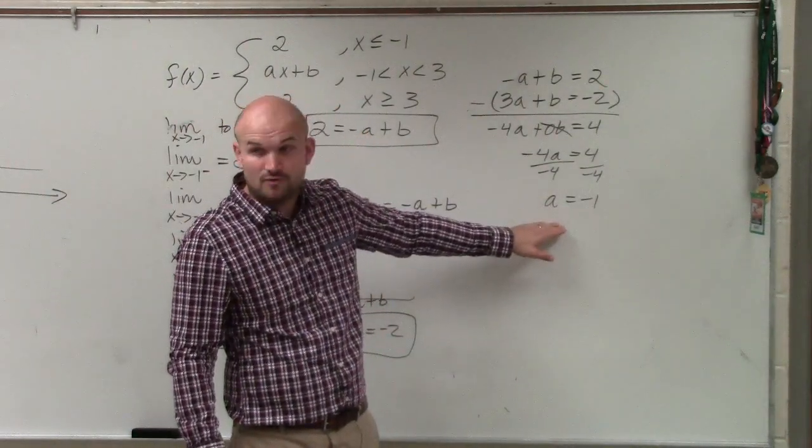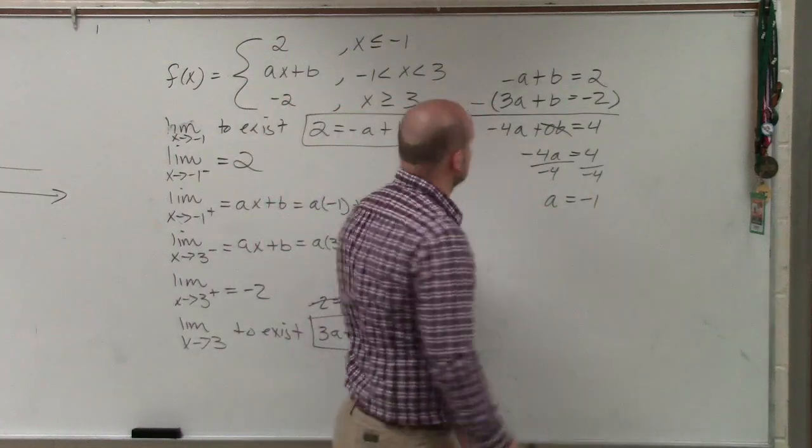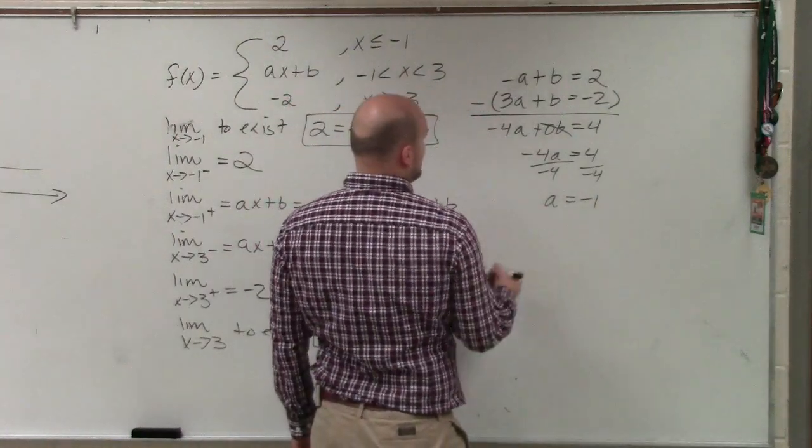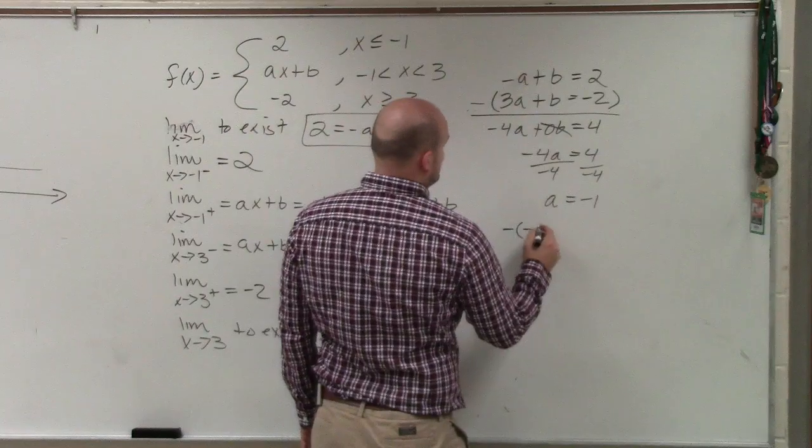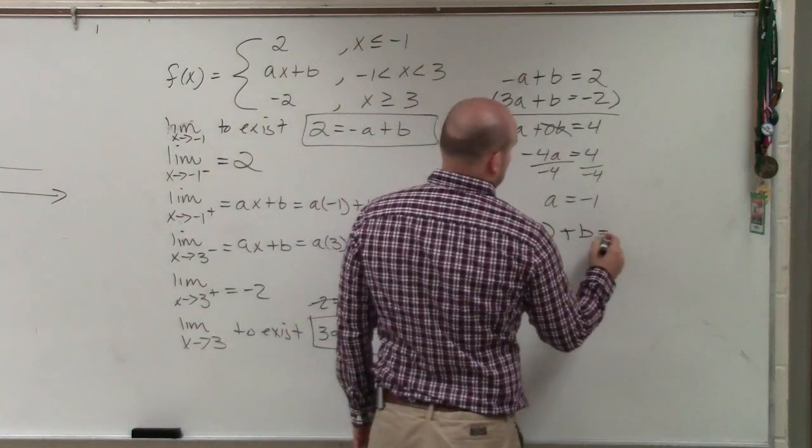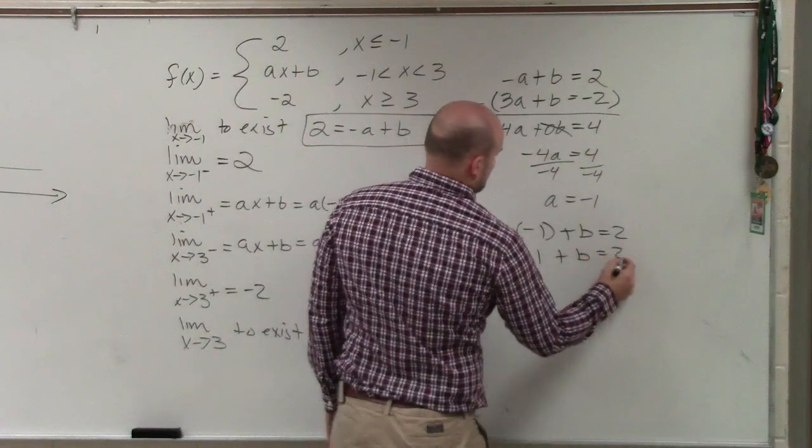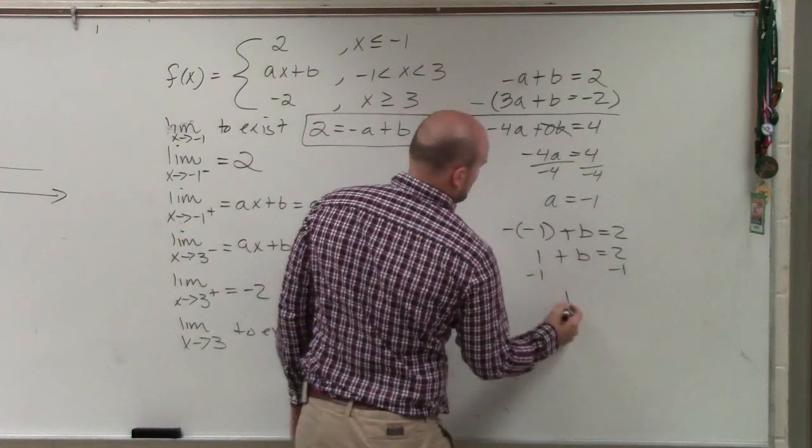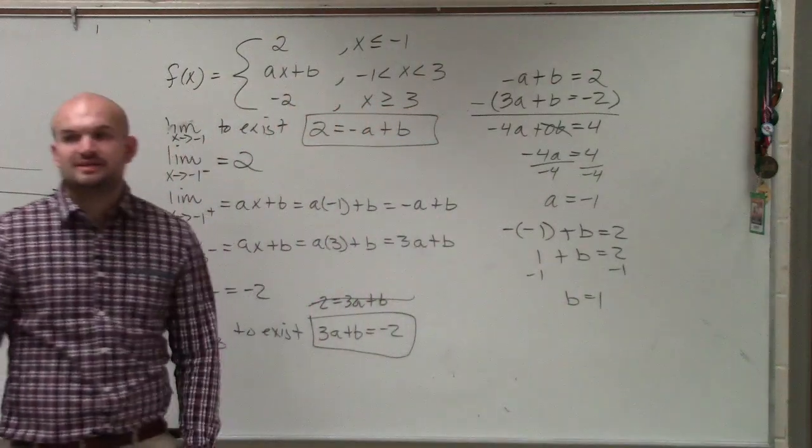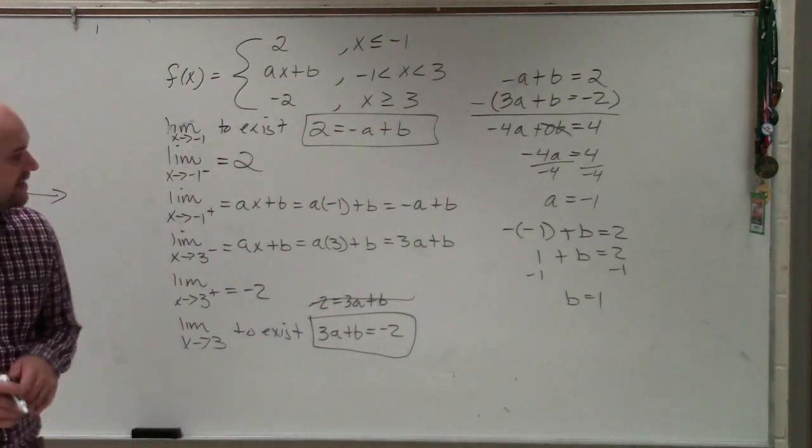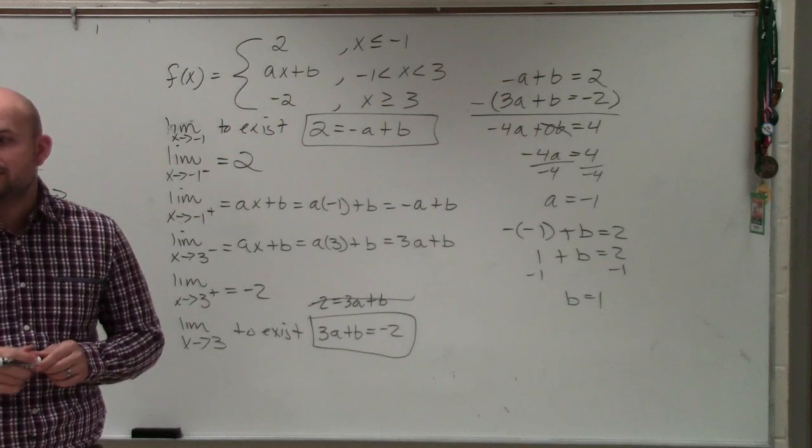So now we know that A equals negative one. So now I can just plug it into either one of my equations. I'll plug it into the top. So therefore, for the function to be continuous, A has to equal negative one, and B has to equal positive one.